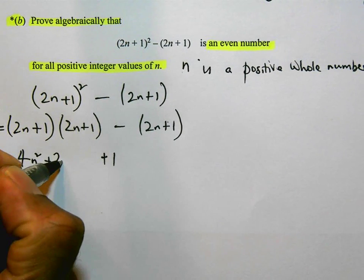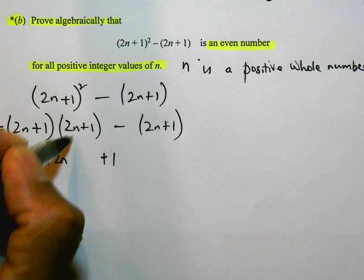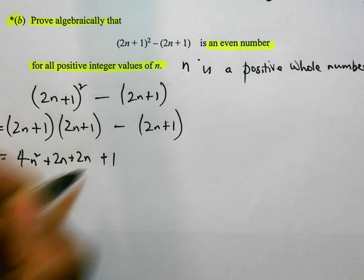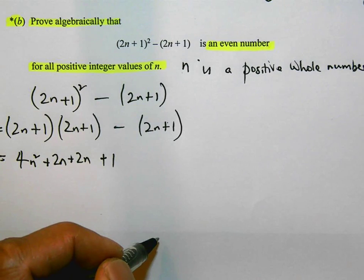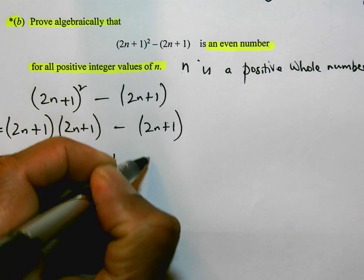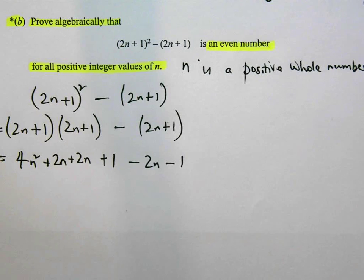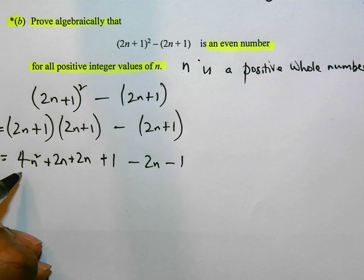If we pass this minus sign through the brackets, I'm going to get minus 2n minus 1. And now let's deal with this expression. Let's tidy it up. So basically we're going to collect together like terms. So how many n squared terms are there in here? There's just those 4, so I have 4n².